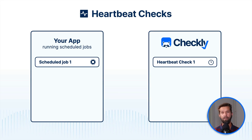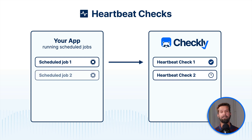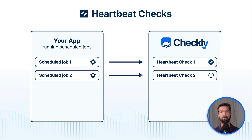Before I show you how you can create and configure heartbeat checks, let's talk about the heartbeat check concept. Here on the left side you see your application that runs scheduled jobs, whatever they might be. And there on the right side is the Checkly Cloud with one defined heartbeat check. A heartbeat check comes with a unique URL and you define how often you want this URL to be called by your infrastructure. So when you run the first scheduled job you can let Checkly know that the scheduled job succeeded.